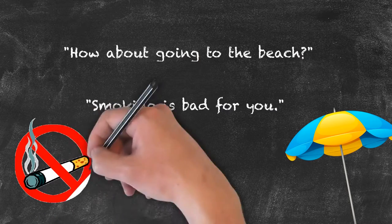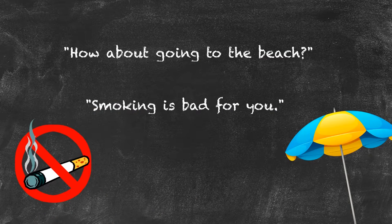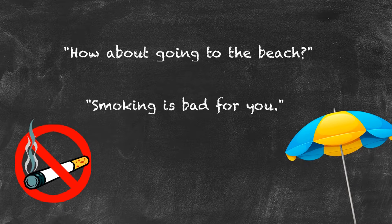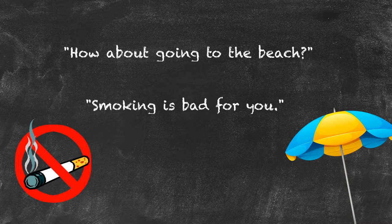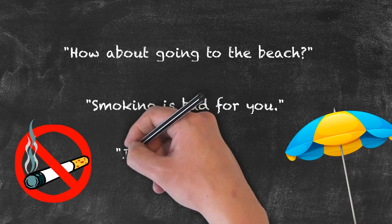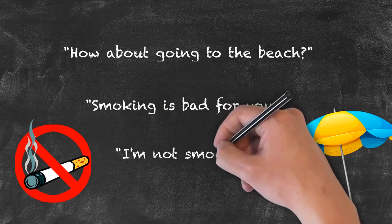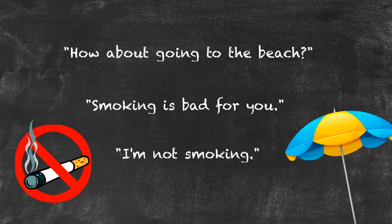The verb plus '-ing' can act as two things within the sentence. We've got the gerund — otherwise the noun in the sentence — as in 'Smoking is bad for you.' You've also got the verb plus '-ing' in the present participle form, wherein it's the main verb of the sentence. An example thereof would be: I'm not smoking.